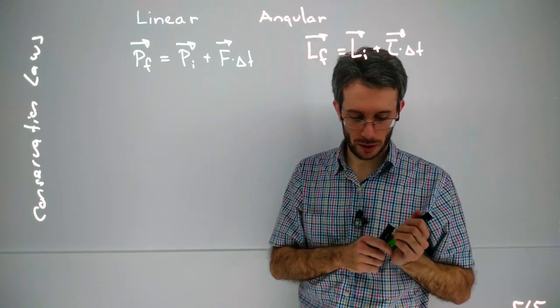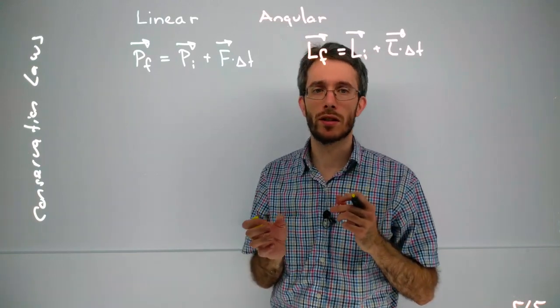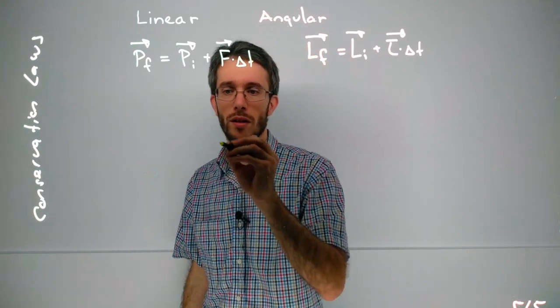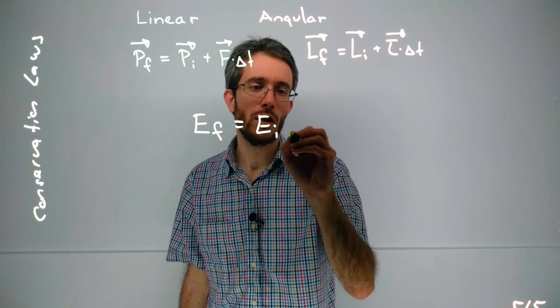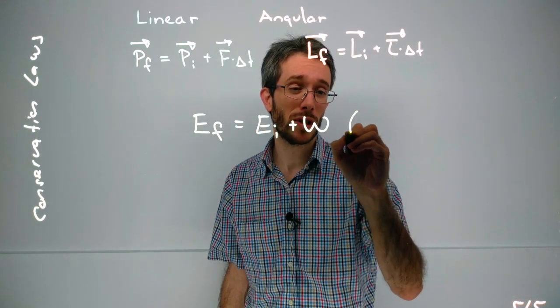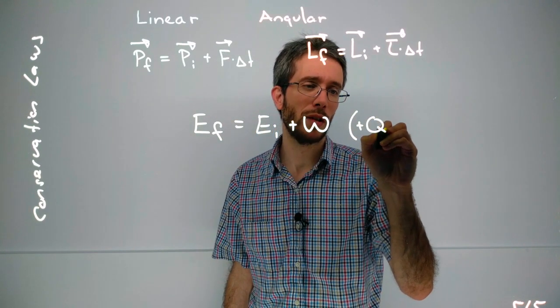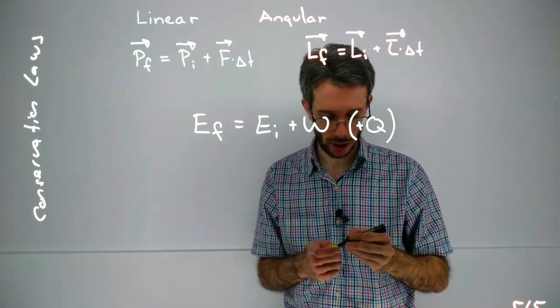Other big conservation law that we had is the same for angular and linear case, and it's actually not a vector law. We have that energy final is energy initial, plus the work done by external forces, and if you are considering thermodynamics and chemistry as well, then we could also add the heat as a form to increase or decrease the energy.